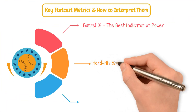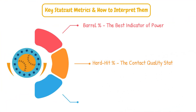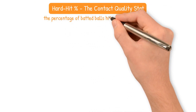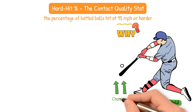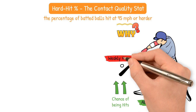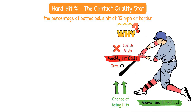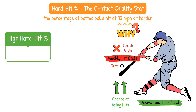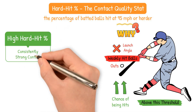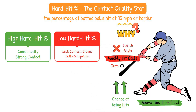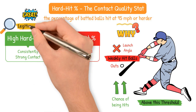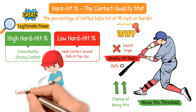Next, we have hard hit percentage — the contact quality stat. Hard hit percentage is the percentage of batted balls hit at 95 miles per hour or harder. Balls hit above this threshold have a significantly higher chance of being hits, while weakly hit balls are more likely to be outs regardless of launch angle. A high hard hit percentage equals consistently strong contact; a low hard hit percentage means more weak contact ground balls and popups. This stat is great for identifying hitters with legitimate power versus those who are getting lucky.